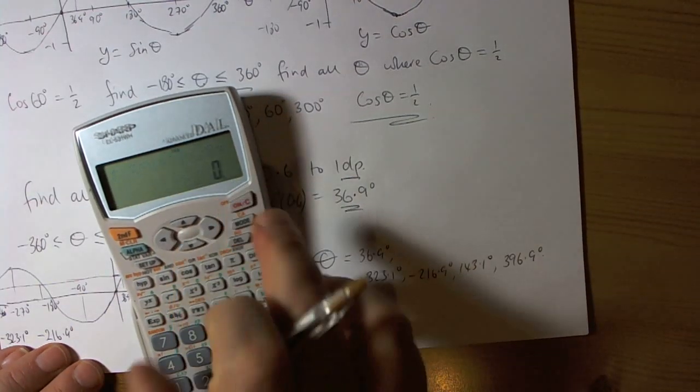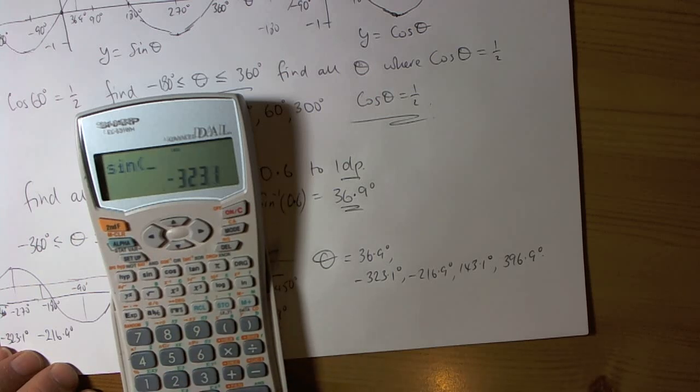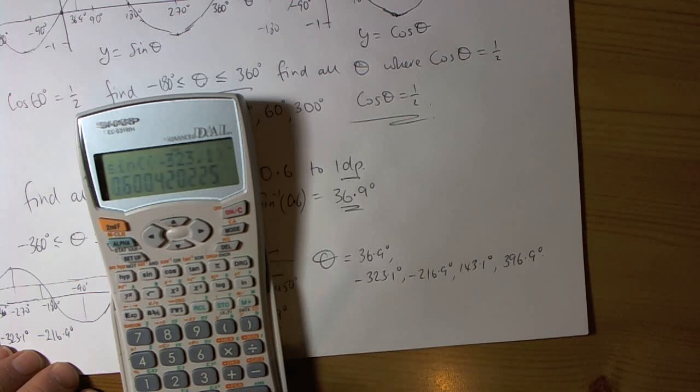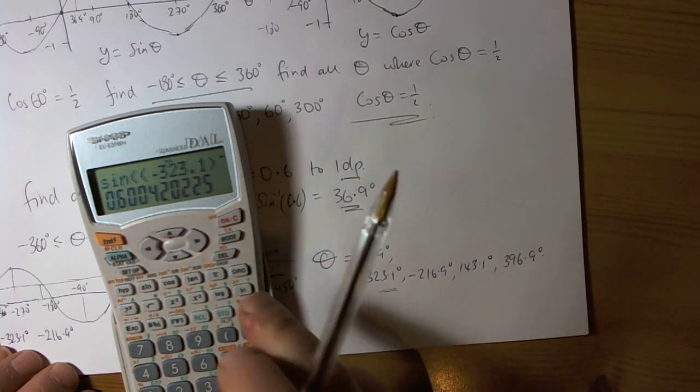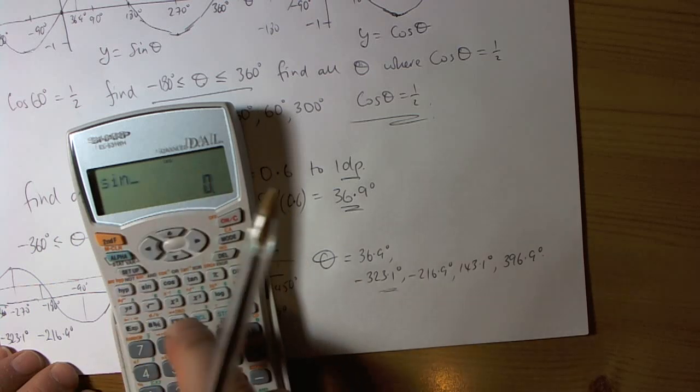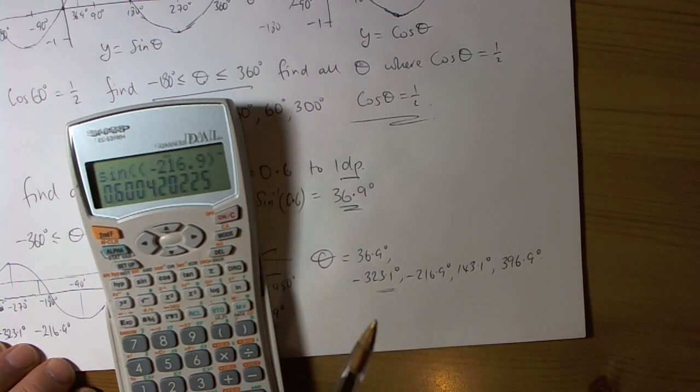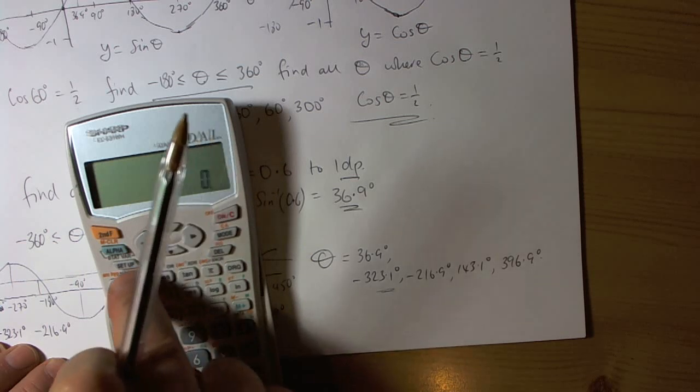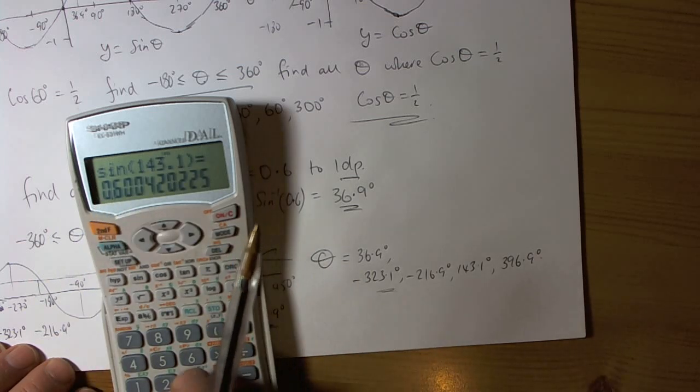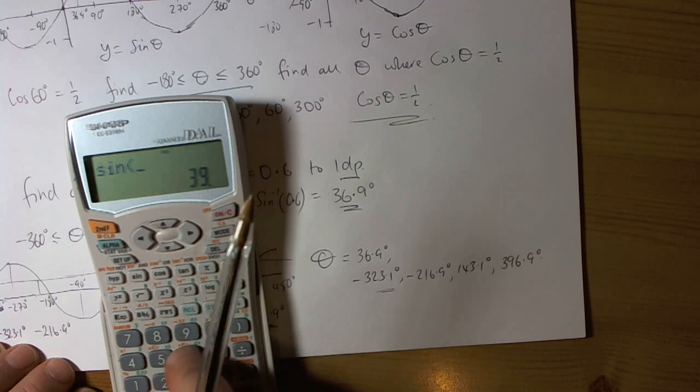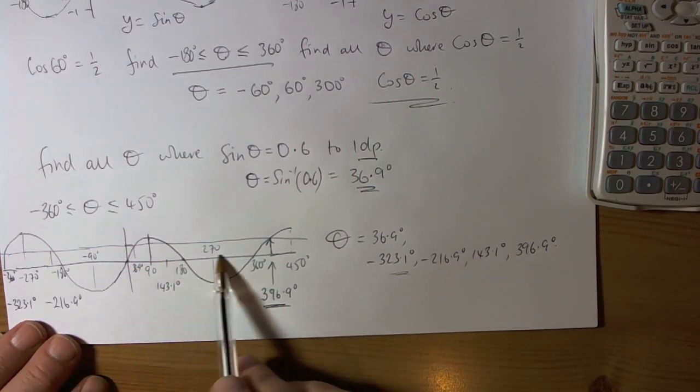So we should obviously check. Just calculator, that question. So the sine of negative 323.1 is going to be 0.6. That's fine. It doesn't matter, that's a bit out, it relates to one decimal place accuracy, so it won't be exactly 0.6. So then we've got the sine of negative 216.9. Again 0.6, no problem. And then we've got the sine of 143.1 degrees, 0.6. And then we've got the sine of 396.9 degrees equals 0.6.